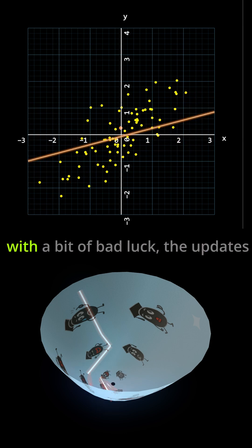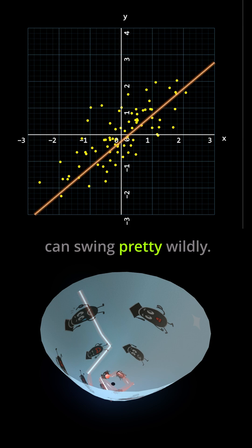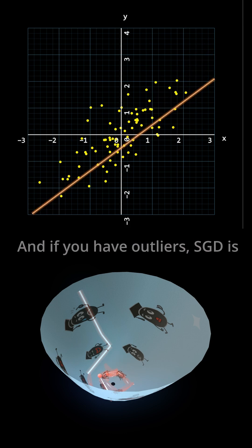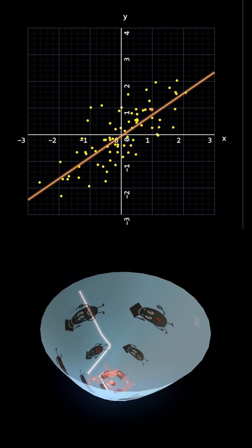Even when the data is well-shuffled, with a bit of bad luck, the updates can swing pretty wildly. And if you have outliers, SGD is heavily influenced by them, especially early on.